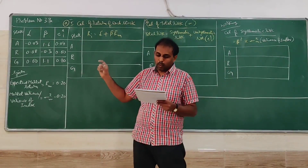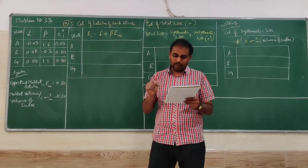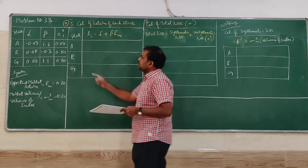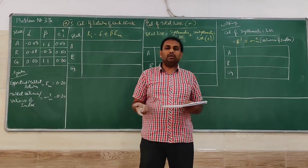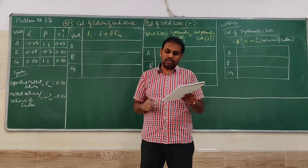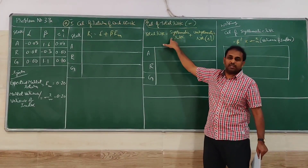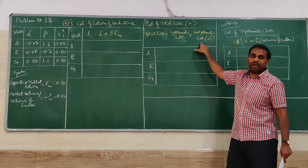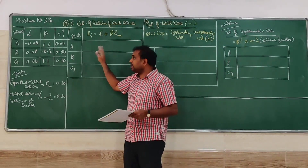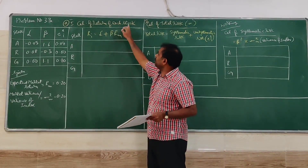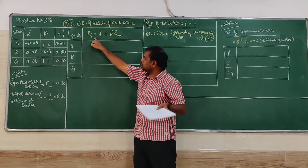The question asks: which single stock would the investor prefer from a risk and return point of view — A, R, or G? The investor always looks at total risk: both systematic and unsystematic risk. What is not given in the problem is return, so first we calculate the return for each stock using the formula: return = α + β × Rm.